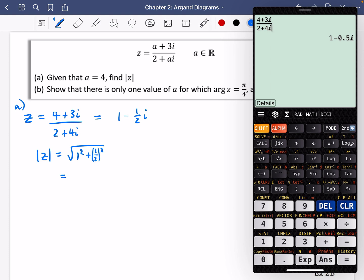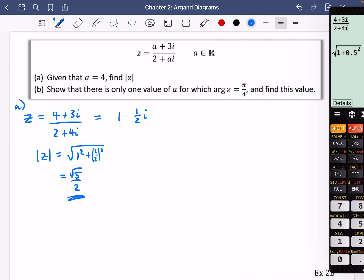So if I want to find the modulus of this, I'm going to find the modulus of z by doing the square root of 1 squared plus a half squared. I can ignore that negative there that I've got. So it's going to be 1 squared, which is 1 plus a half squared. And that is root 5 over 2. So part A of the question was nice and easy.